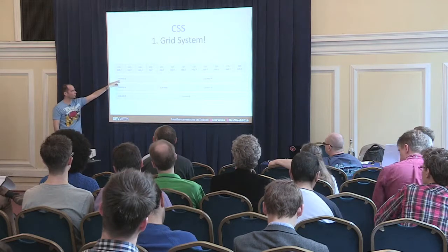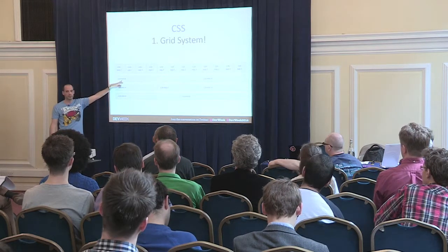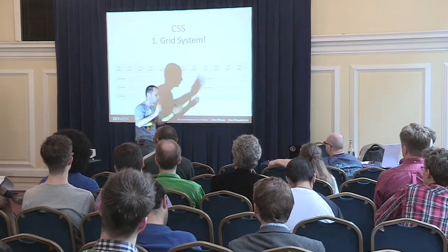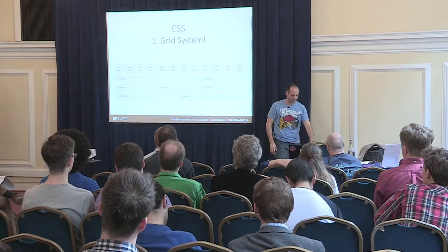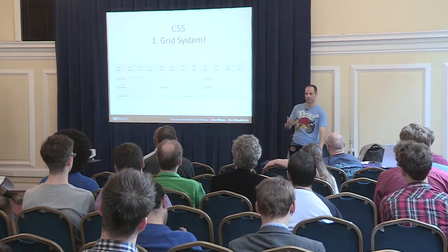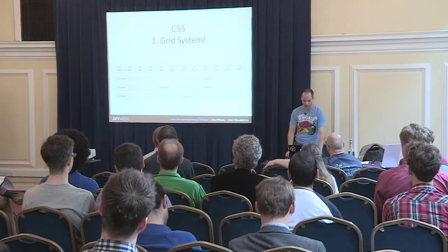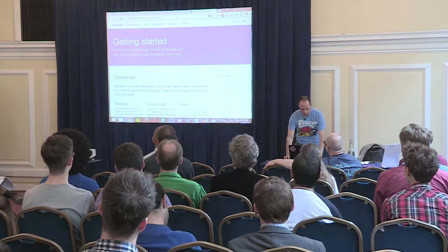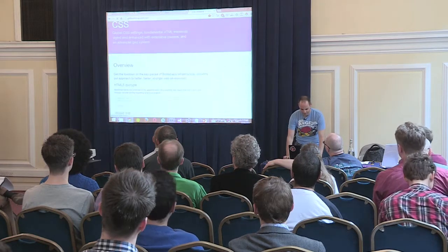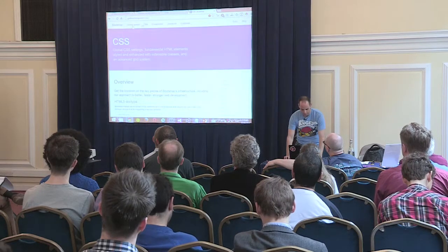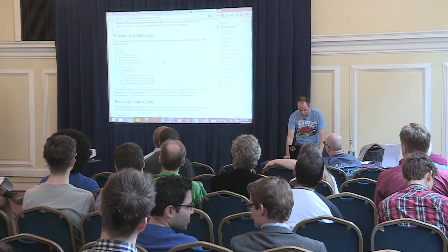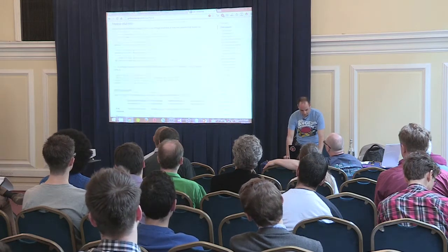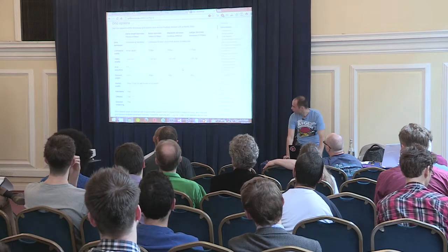You see it says col-md — md means medium. Bootstrap has four types of widths: large devices which are desktops with a max container width of 1,170px; then 970px; then 750px; then 100%. There is a differentiation between extra small devices (mobile phones), small devices (tablets), medium devices (tablets or small screens), and desktop screens.